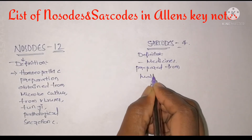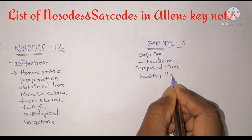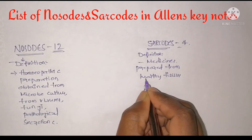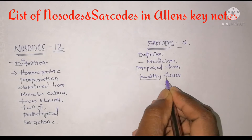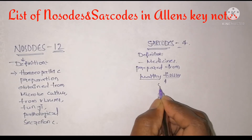So there are seven sarcode remedies and 12 nosode remedies in our LNSK notes of homeopathic materia medica.